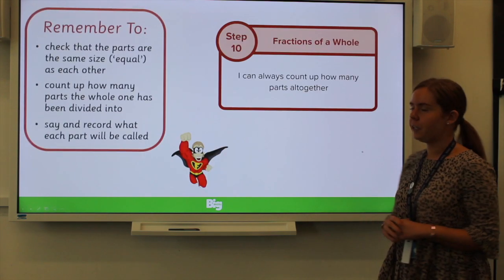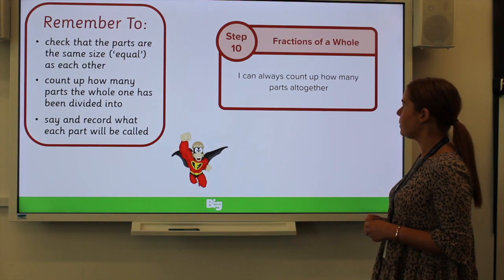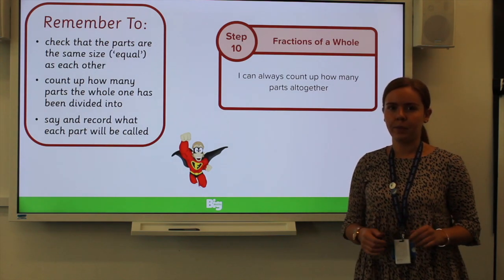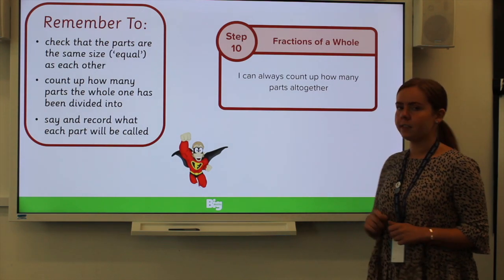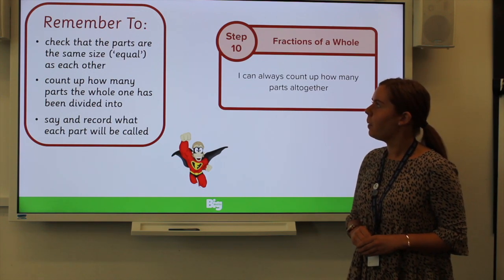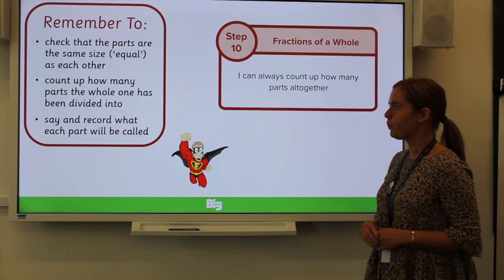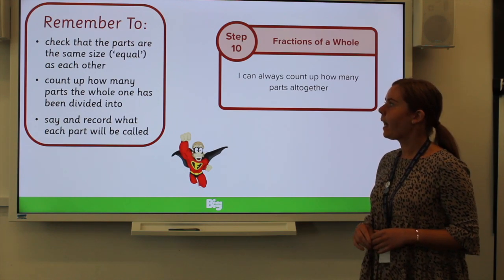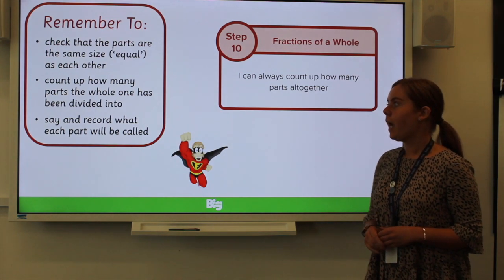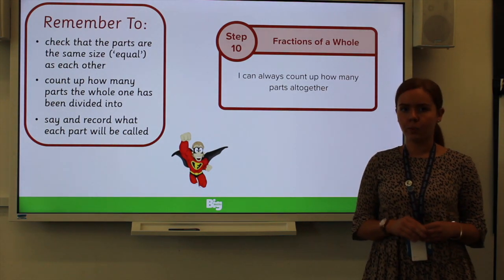The first learning objective is going to be: I can always count up how many parts altogether. There are three steps we need to take to achieve this. The first is that we need to check that the parts are the same size so they're equal. Then we need to count up how many parts the whole has been divided into. And finally, we need to say and record what each part will be called.